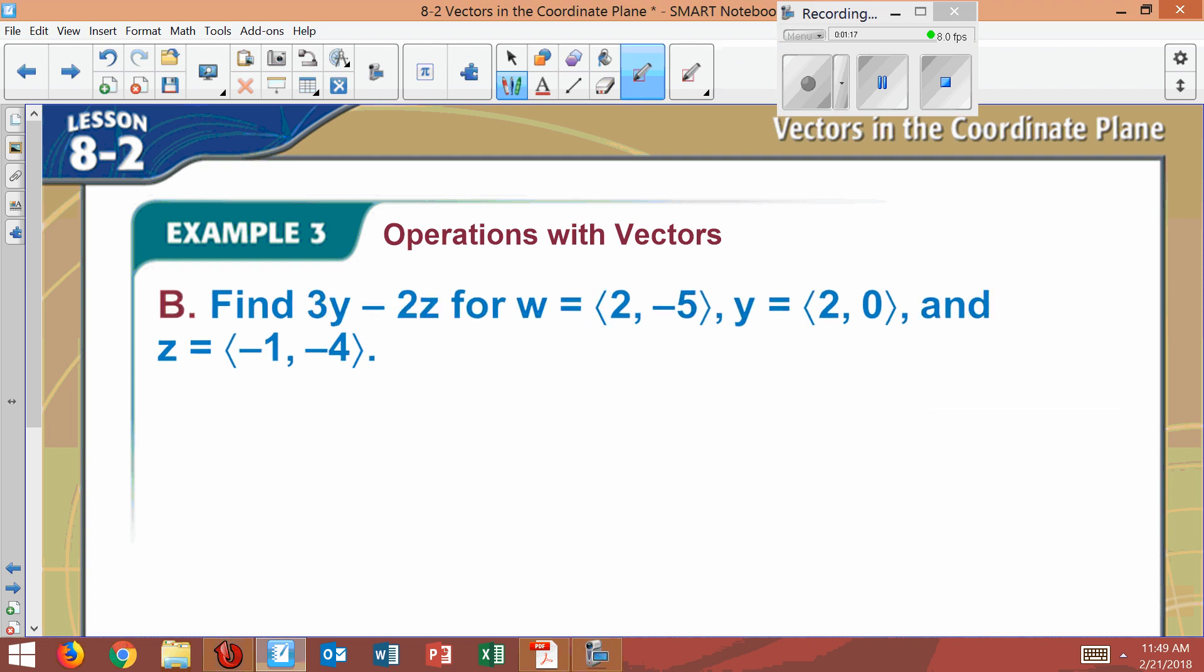Now let's try part B. So it's 3y minus 2z. So now we have 3y, which would equal 6, 0. And then we also have 2z. So I multiply that by 2. I get negative 2 and negative 8. That is 2z.